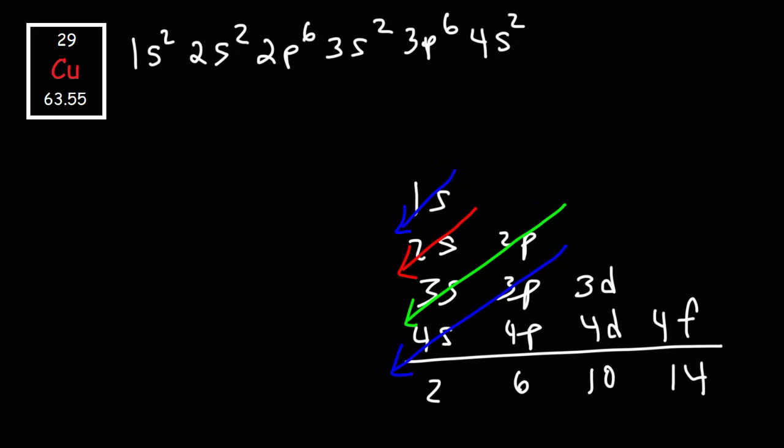We need 9 more in order to get to 29. D can hold up to 10, but we're not going to use all 10. We're going to stop at 3D9. So this is what we expect the electron configuration of copper to be. But something similar happens with copper like it did in chromium. One of the 4S electrons will move to the 3D sublevel.